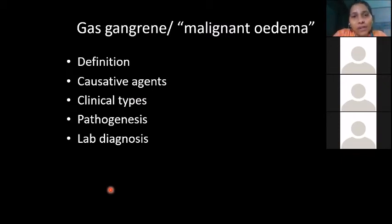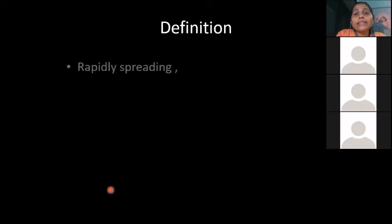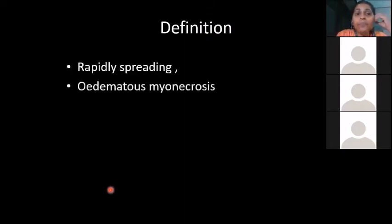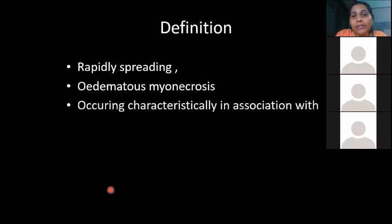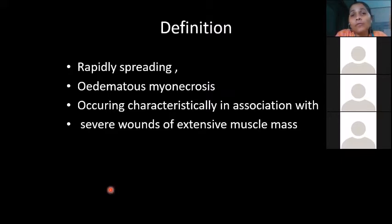When a short note or long question comes on gas gangrene, you need to define it, enumerate the causative agents, describe the different clinical types, explain the pathogenesis, and discuss lab diagnosis. The definition: gas gangrene is a rapidly spreading malignant edematous myonecrosis — meaning the muscles undergo necrosis.